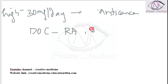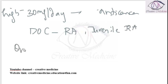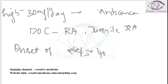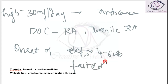Methotrexate is the drug of choice for rheumatoid arthritis and also the drug of choice for juvenile rheumatoid arthritis. Onset of relief with Methotrexate will occur after 4 to 6 weeks, making it the fastest acting DMARD.